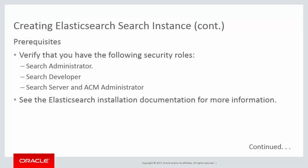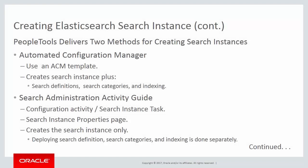Before creating the instance, verify that you have the necessary roles: search administration, search developer, search server, and ACM administration. There are two ways to create an Elasticsearch search instance. Using Automated Configuration Management enables you to automate the configuration of an Elasticsearch instance, including deploying search definitions and categories as well as automating indexing. The search administration activity guide configuration activity features a search instance task where you use the Search Instance Properties page to create the instance.